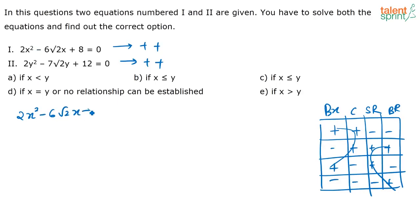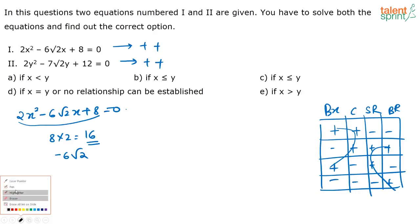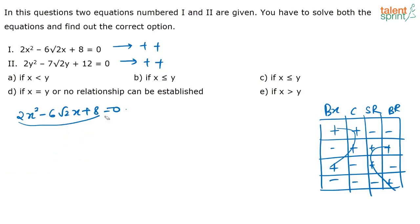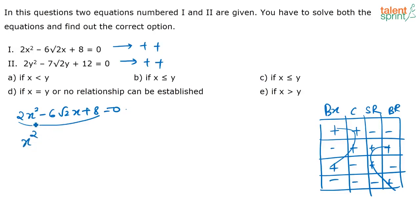For the first equation: 2x² - 6√2·x + 8 = 0. The product of a and c is 8 × 2 = 16, and their sum is -6√2. Actually, you can simplify further — since 2 is common, take it out to get x² - 3√2·x + 4 = 0. This reduces steps and makes calculation faster since there's no coefficient before x².